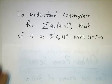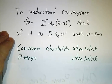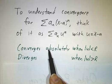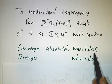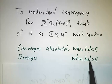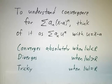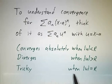So we find the radius of convergence and we know that the series converges absolutely whenever you're within the radius of convergence. You know it diverges whenever you're outside the radius of convergence. And you know that it can be tricky whenever you're at the radius of convergence.